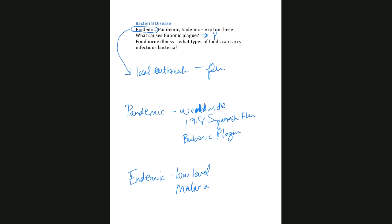Bubonic plague is caused by the bacterium Yersinia pestis. We have antibiotics today to treat it — not long ago in Arizona and New Mexico, both people and rats tested positive for plague, so it's still around but treatable. For foodborne illness, there's not a type of food that can't carry it — meat, vegetables, and fruit all have the potential to carry foodborne disease.